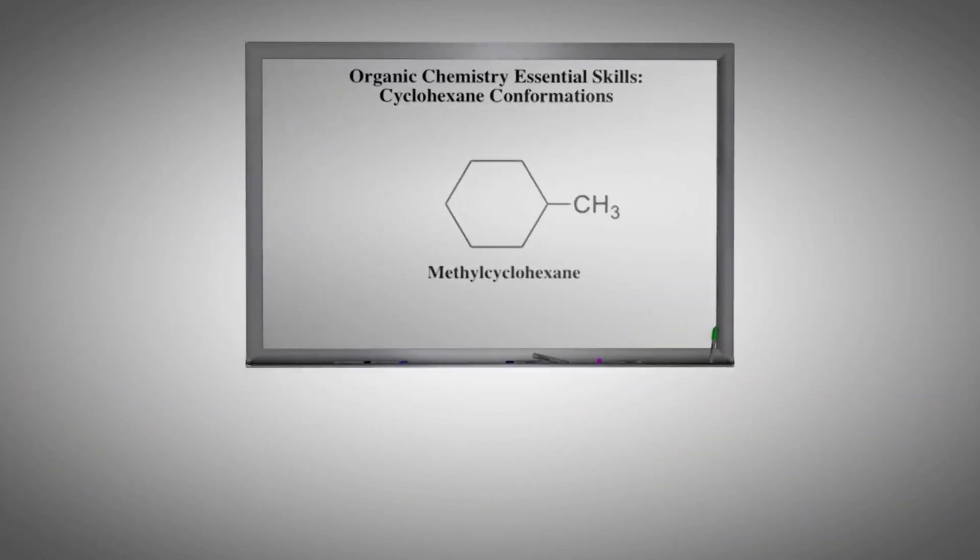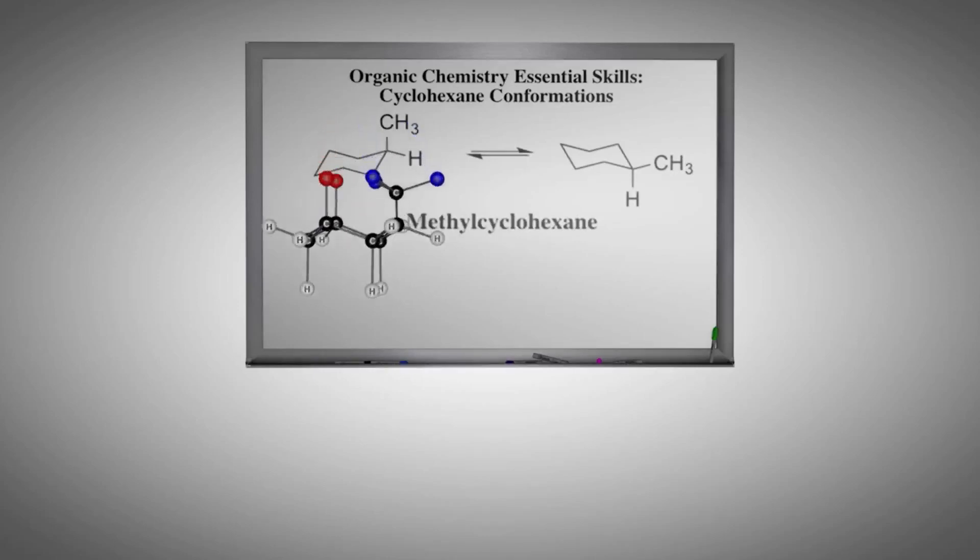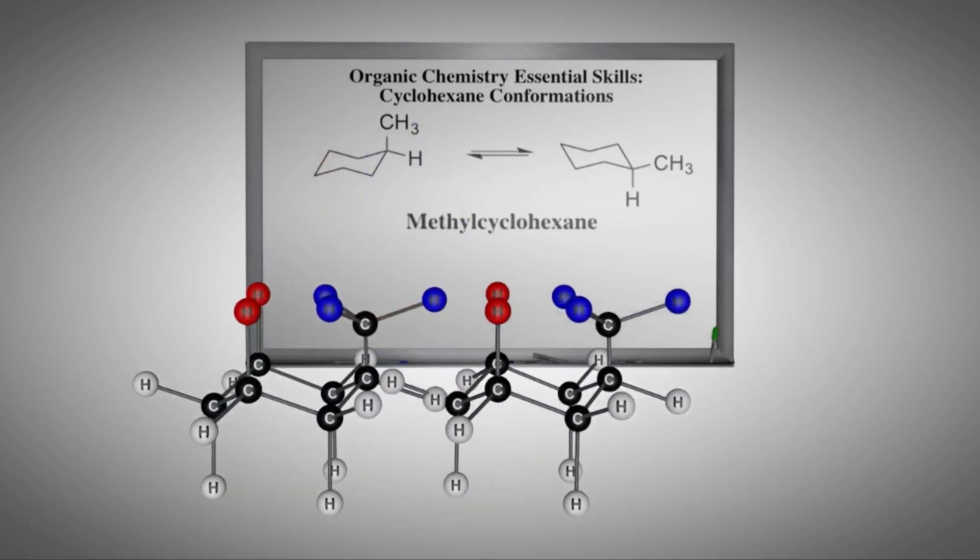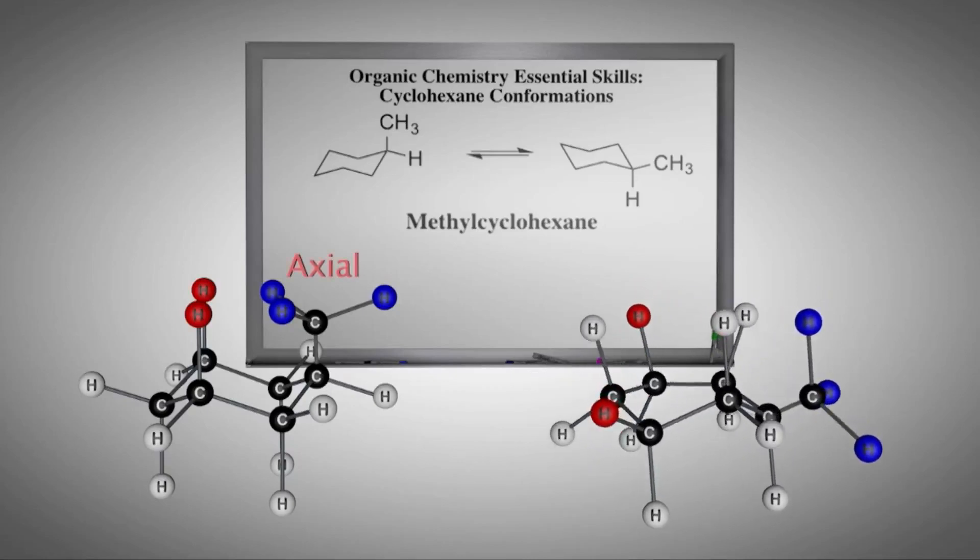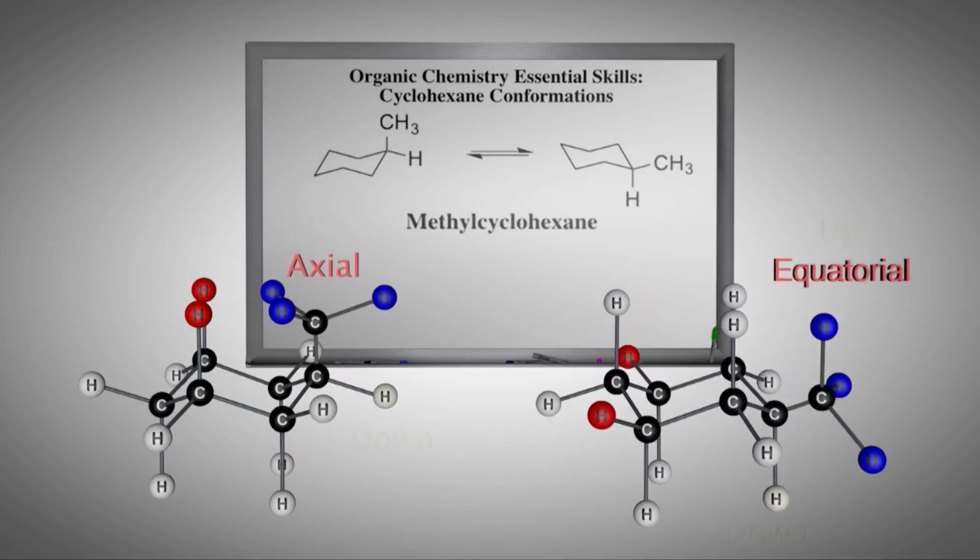These concepts are further demonstrated when we examine the two conformations of methyl cyclohexane, which your instructor will represent on the board as shown. Notice when methyl cyclohexane undergoes chair inversion, the methyl groups start out axial and then become equatorial. And the methyl group is still up, relative to the hydrogen on that carbon for both chair conformations.